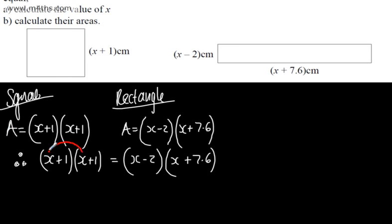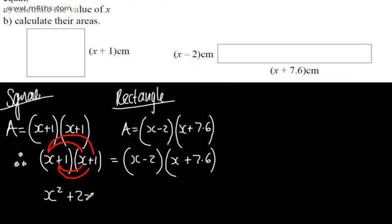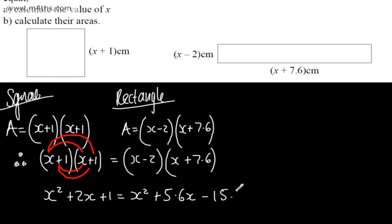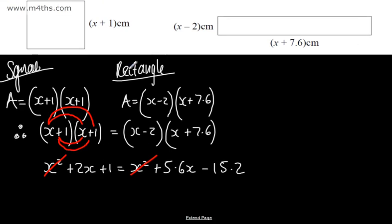Expanding, I'm going to multiply x by x, x by 1, 1 by x, and 1 by 1. On the left-hand side we get x squared plus 2x plus 1. Expanding the right-hand side gives x squared plus 7.6x minus 2x, which is plus 5.6x, and then minus 2 lots of 7.6, which is minus 15.2. Both x squared terms cancel, so this is not a quadratic equation — it's a linear equation with x to the power of 1.